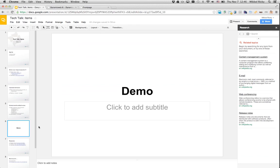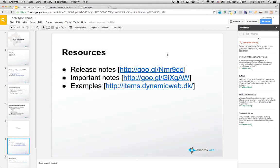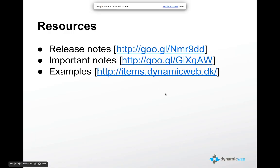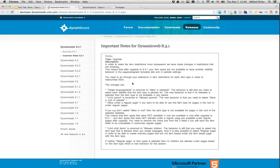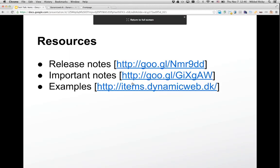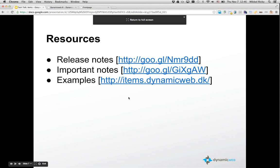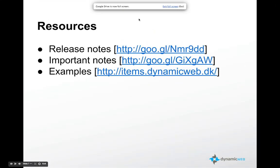That's basically what I will cover. I've collected a few resources you should look at: first, the release notes — whenever we put out a new release, check the release notes and the important notes to see if you need to do something before or after upgrading. In this case it says you have to do something after the upgrade. Also check out the example site and go to GitHub to get a copy of the item types and templates to play around with.